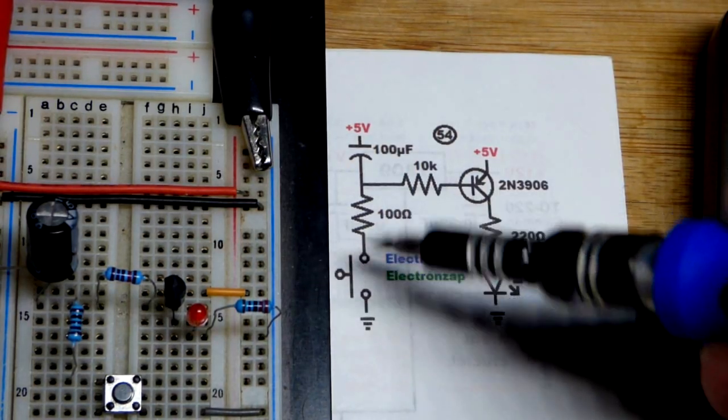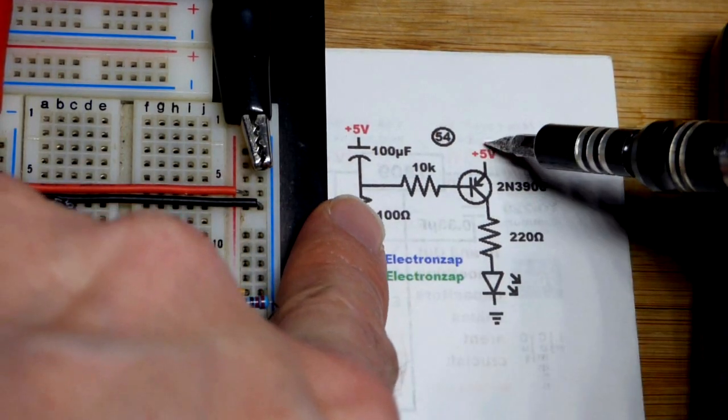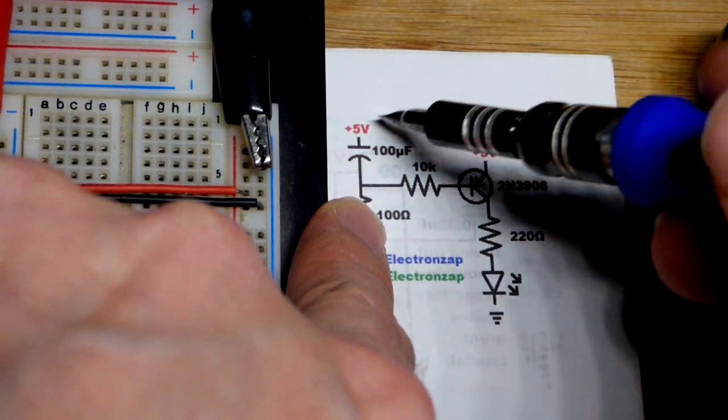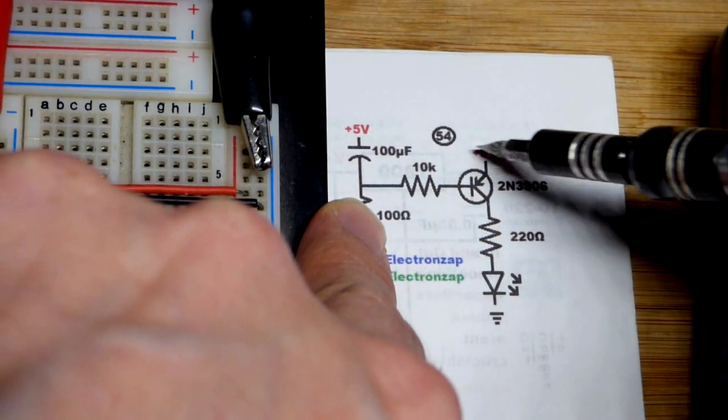We open the switch, so that doesn't matter anymore. That's gone once the switch is open. Electrically, there you can see we got the positive supply of the capacitor and the emitter connected together.